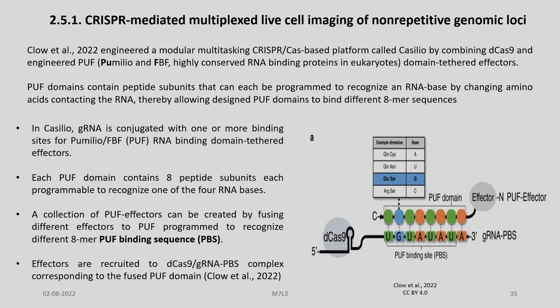Clow et al. recently engineered a modular multi-tasking CRISPR-Cas based platform called CasSILO by combining D-Cas9 and engineered PAF or Pumilio and FBF — highly conserved RNA binding proteins in eukaryotes — as domain-tethered effectors. PAF domains contain peptide subunits that can be programmed to recognize an RNA base by changing amino acids contacting the RNA, thereby allowing designed PAF domains to bind different octamer sequences. In CasSILO, the guide RNA is conjugated with one or more binding sites for Pumilio and FBF RNA binding domain-tethered effectors.